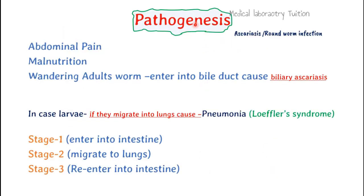In pathogenesis, the infection is called ascariasis or roundworm infection. The patient may experience abdominal pain, and heavy worm burden causes malnutrition as the worms consume all nutrients. Wandering adult worms are dangerous — they can enter the bile duct and block it, causing biliary ascariasis, which disturbs the digestive system. When larvae migrate to the lungs, they cause fever or pneumonia; this condition is called Löffler syndrome in Ascaris lumbricoides infection.